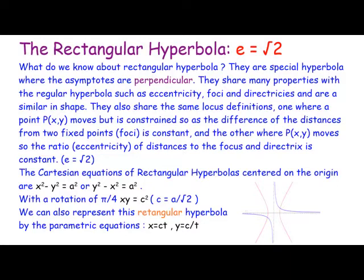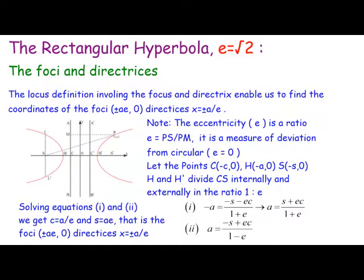You can look at the previous video, which covers the hyperbola in detail, and you can get the equations for the foci and the directrices. We already know the foci are at plus or minus ae, zero, and the directrices are x equals plus or minus a on e.